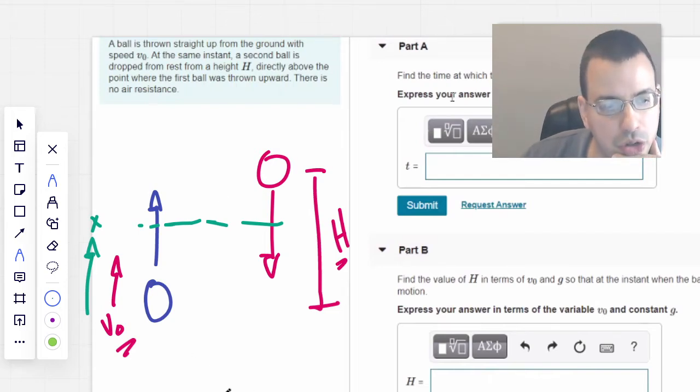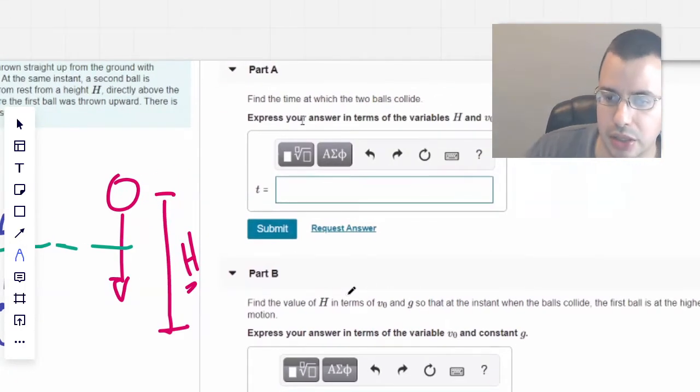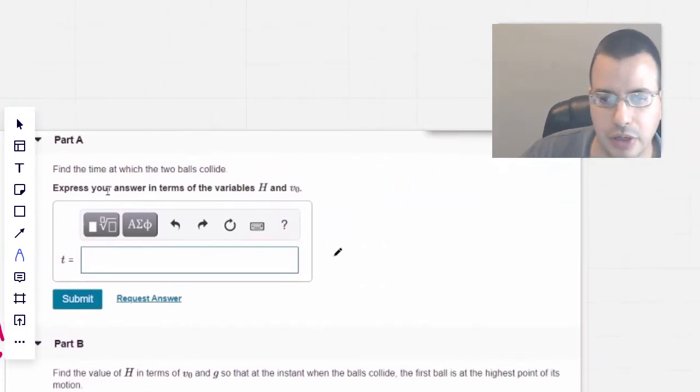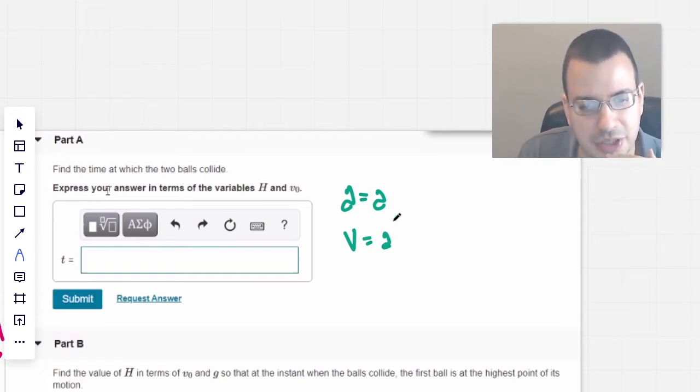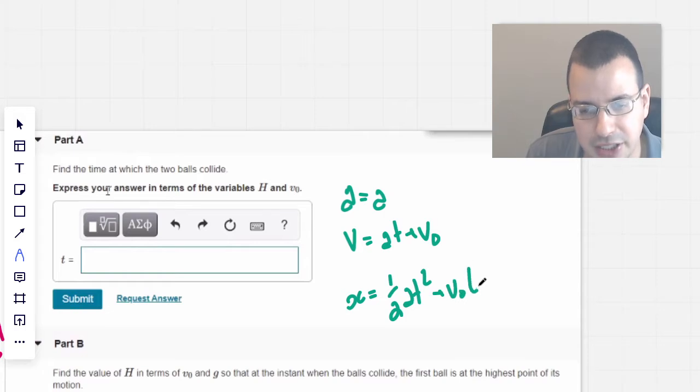So what we're going to do is we're going to use our kinematic equations. So write up the kinematic equations real quick. And I'm going to scoot over here. So we're going to say A equals A. Basically the acceleration is constant. And the specific acceleration here is gravity. V equals AT plus V0. And X equals one half AT squared, that's supposed to be an A, plus V0 T plus X0.